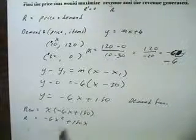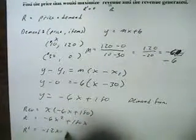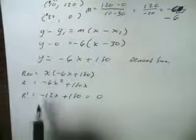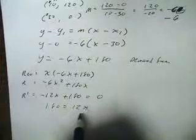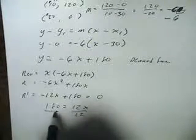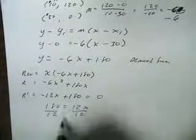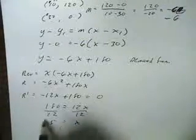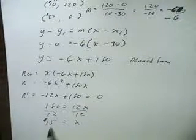To maximize the revenue, I need to take the derivative, which is negative 12x plus 180, and set this equal to zero, then solve for x. I'll move negative 12x to the other side to get 180 equals positive 12x, then divide both sides by 12. This gives x equals 15, so a price of $15 would maximize our revenue.